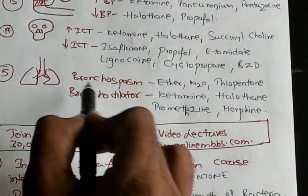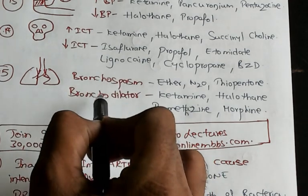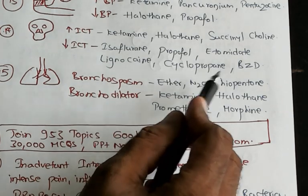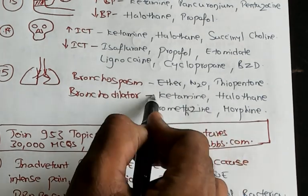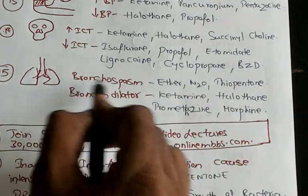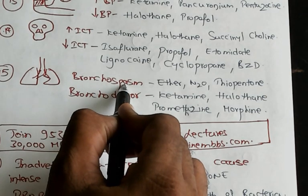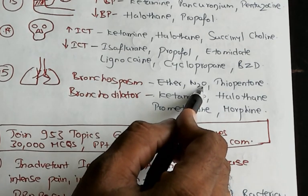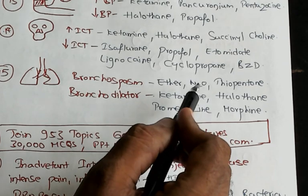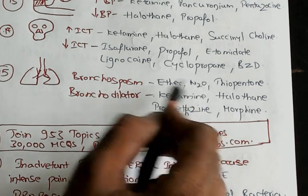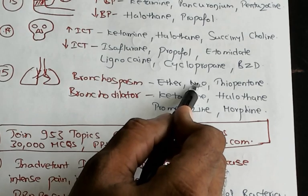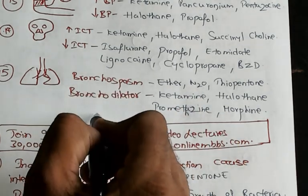What are the bronchospasm-causing anesthetic agents? Ether, nitrous oxide, and thiopentone all cause bronchospasm. It is easy to imagine ether leading to bronchospasm and causing cough. Nitrous oxide is called laughing gas — laughing causes bronchospasm. So remember: ether, nitrous oxide, and thiopentone also lead to bronchospasm.